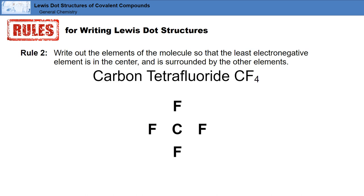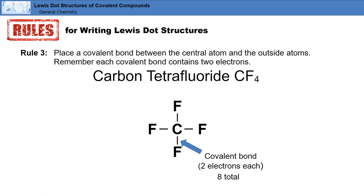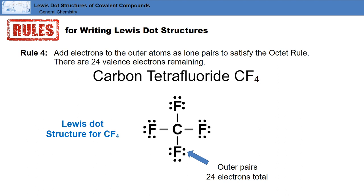Again, we'll use carbon tetrafluoride as our example. Rule three: place a covalent bond between the central atom and the outside atoms. Remember, each covalent bond contains two electrons. The four covalent bonds use eight of the 32 valence electrons in carbon tetrafluoride. The fourth rule is: add electrons to the outer atoms as lone pairs to satisfy the octet rule. This uses 24 electrons. There are no electrons left, so this is the Lewis dot structure for carbon tetrafluoride.